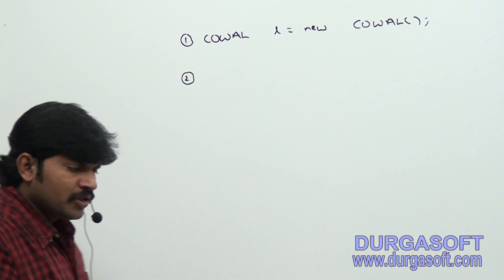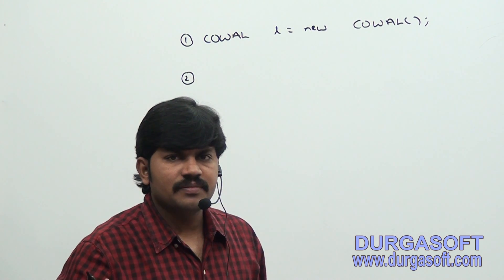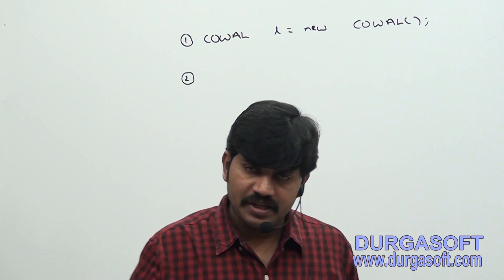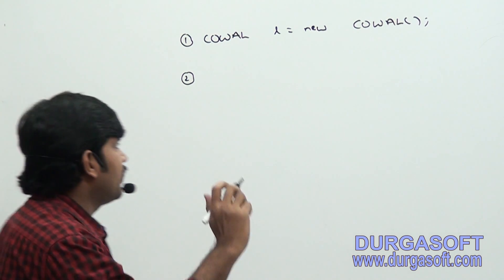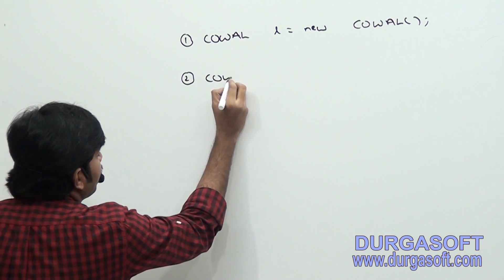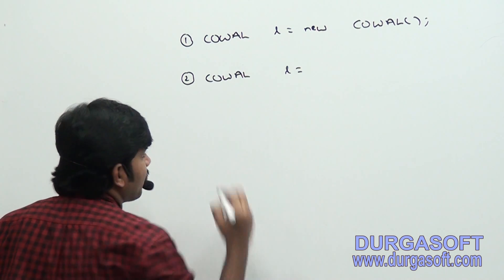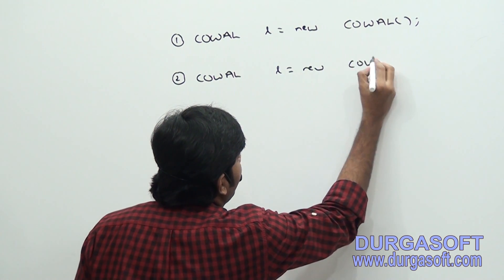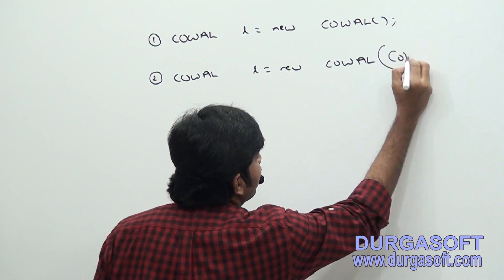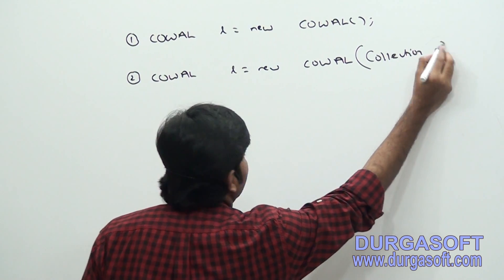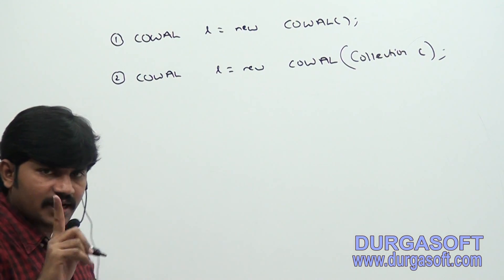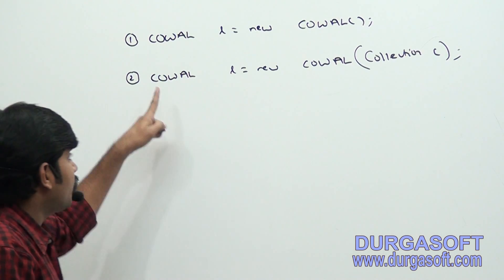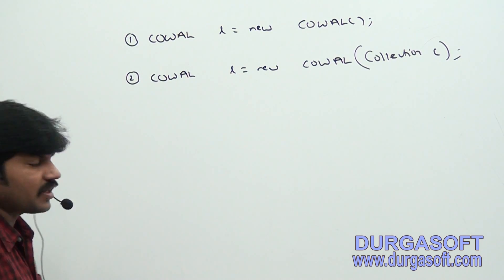Sometimes, for any collection object, how to create an equivalent CopyOnWriteArrayList object? CopyOnWriteArrayList l = new CopyOnWriteArrayList(collection) — for any collection object, you can create an equivalent CopyOnWriteArrayList. This is the second constructor.